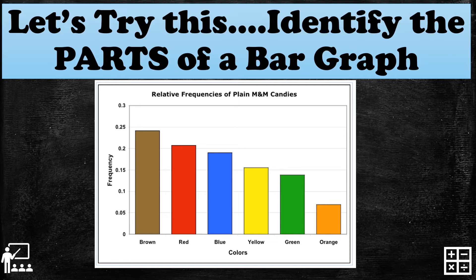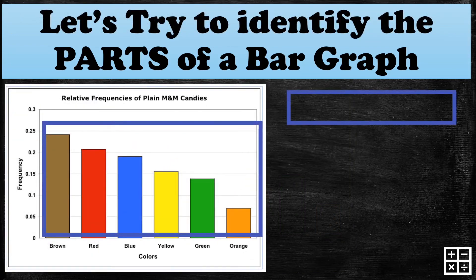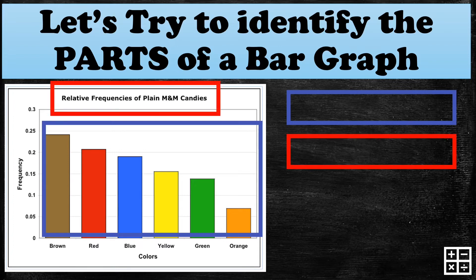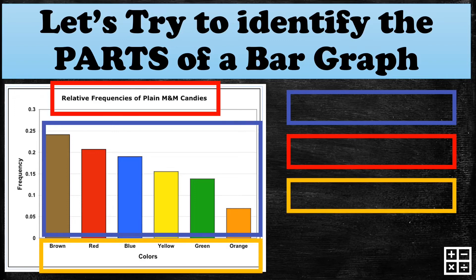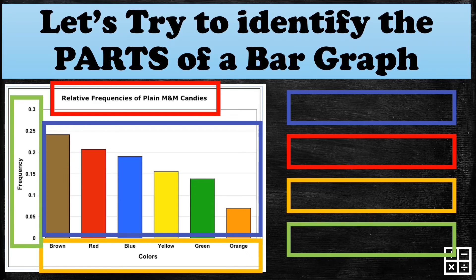Let's try this — identify the parts of a bar graph. This is a vertical bar graph because the data is drawn vertically. What do you call this part? How about this one? How about the color yellow? And the last part, the color green. Can you name the parts of a bar graph? Let's check your answers after 30 seconds — your time starts now.